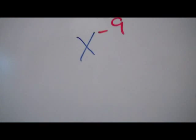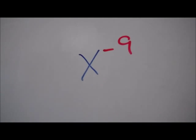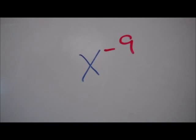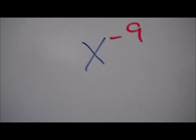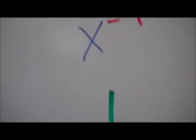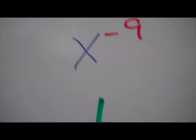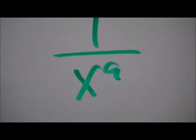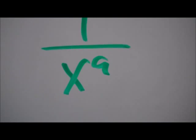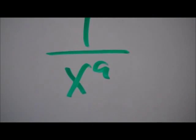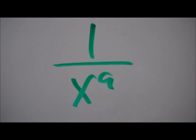Now we'll make things a little bit more complicated by using the alphabet with math. For example, x to the negative 9 power — the same rule still applies when I have a negative exponent: it's 1 over x to the 9th. I can't solve this because I don't know what x is, so that's in simplest form.